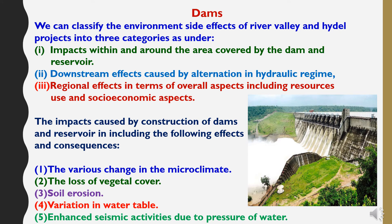Now to study about dams. We can classify the environmental side effects of river valley and hydel projects into three categories: first, impacts within and around the area covered by the dam and reservoir; second, downstream effects caused by alteration in the hydraulic regime; and third, regional effects in terms of overall aspects including resource use and socio-economic aspects. The impacts caused by construction of dams and reservoirs include changes in microclimate, loss of vegetative cover, soil erosion, variation in water table, and enhanced seismic activities due to the pressure of water.